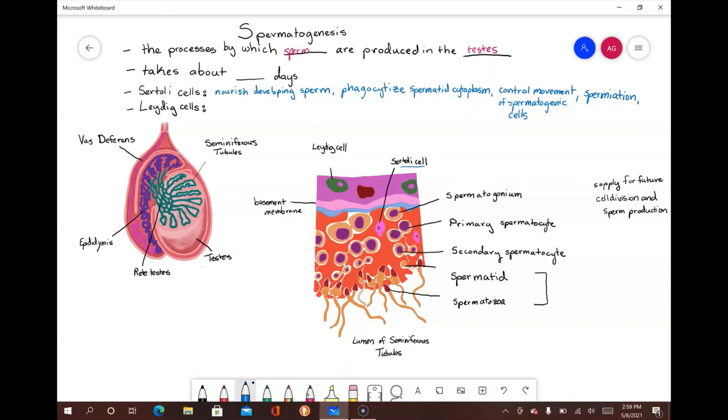Sertoli cells secrete inhibin, which feeds back to the anterior pituitary gland, regulating the release of follicle-stimulating hormone. Between the spaces next to the seminiferous tubules, there are interstitial cells known as Leydig cells, which secrete testosterone.